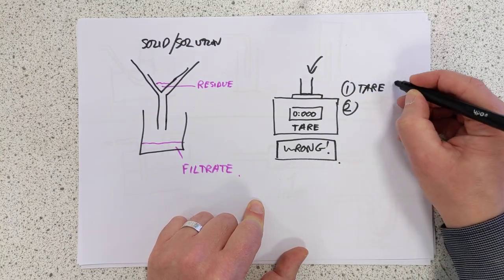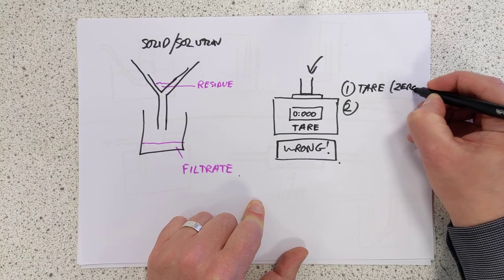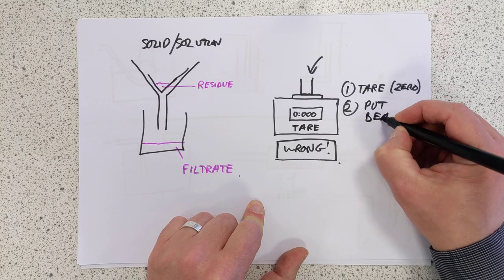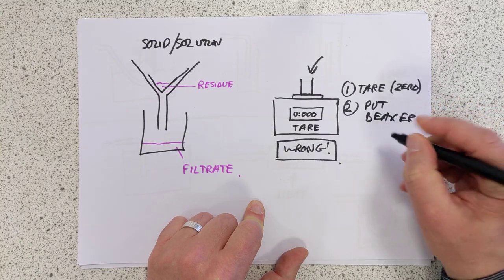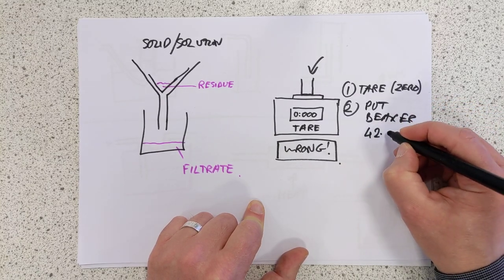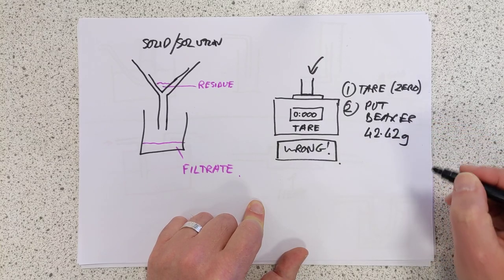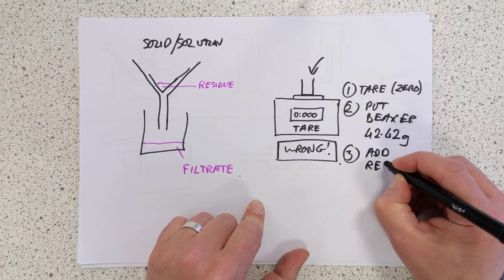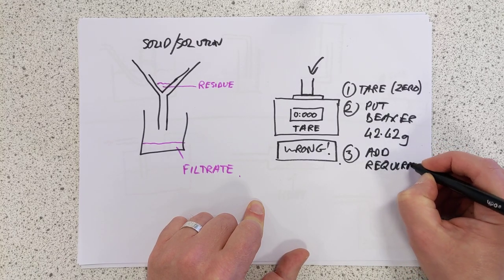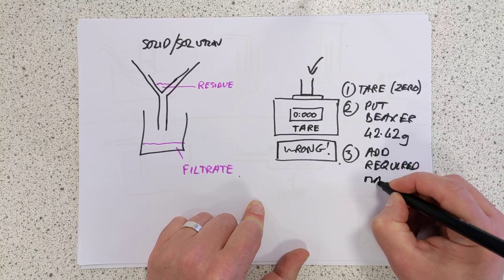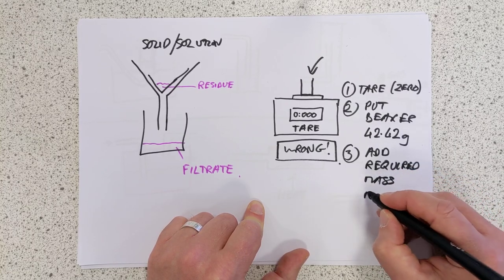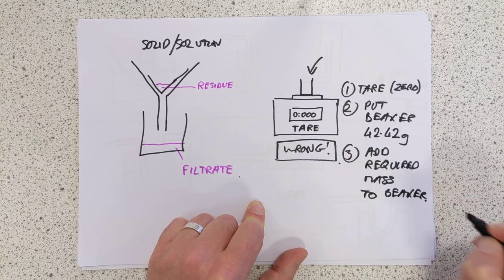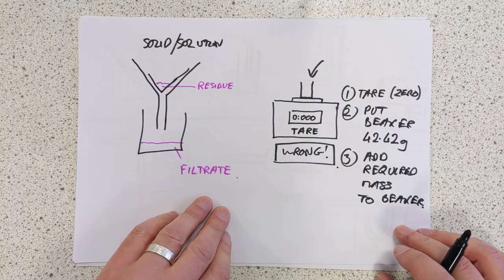Number one, tare the balance, that just means zero it, by the way. Number two, put your beaker on. You get a measurement for the beaker. Say, for example, 42.42 grams is the measurement of the beaker. Number three, now add the required amount of chemical to the beaker. I'm not going to go into why it's wrong here. I can't be bothered. This is the right way to do it, trust me.